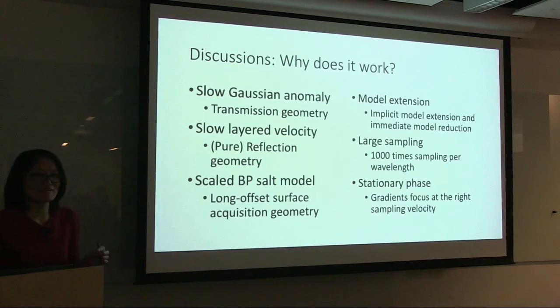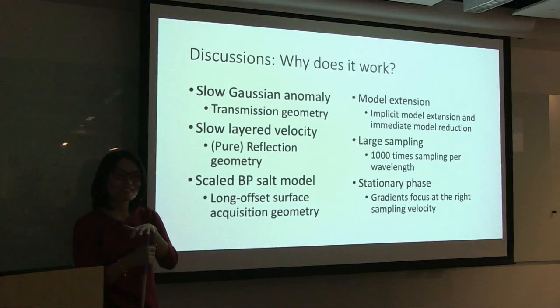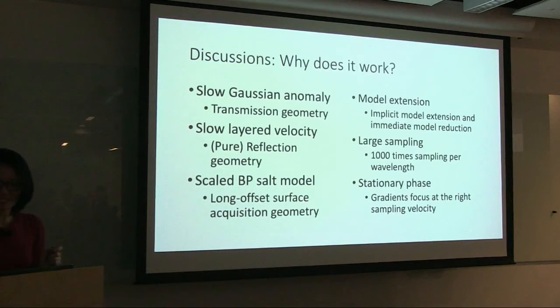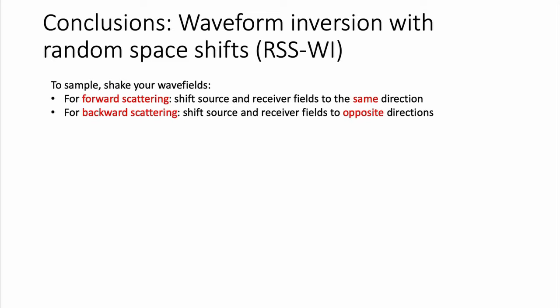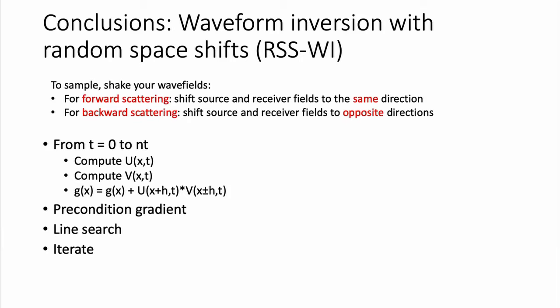These are my speculations — there is no proof of any sort. If you are a mathematician interested in helping us understand why this works so well, please let me know. The key conclusions are: for forward scattering, you must shift wave fields in the same direction; for backward scattering, in opposite directions — that was a surprise, but we have some math to support it. The RSS algorithm is as simple as it gets to improve FWI, and I encourage everyone to try it.